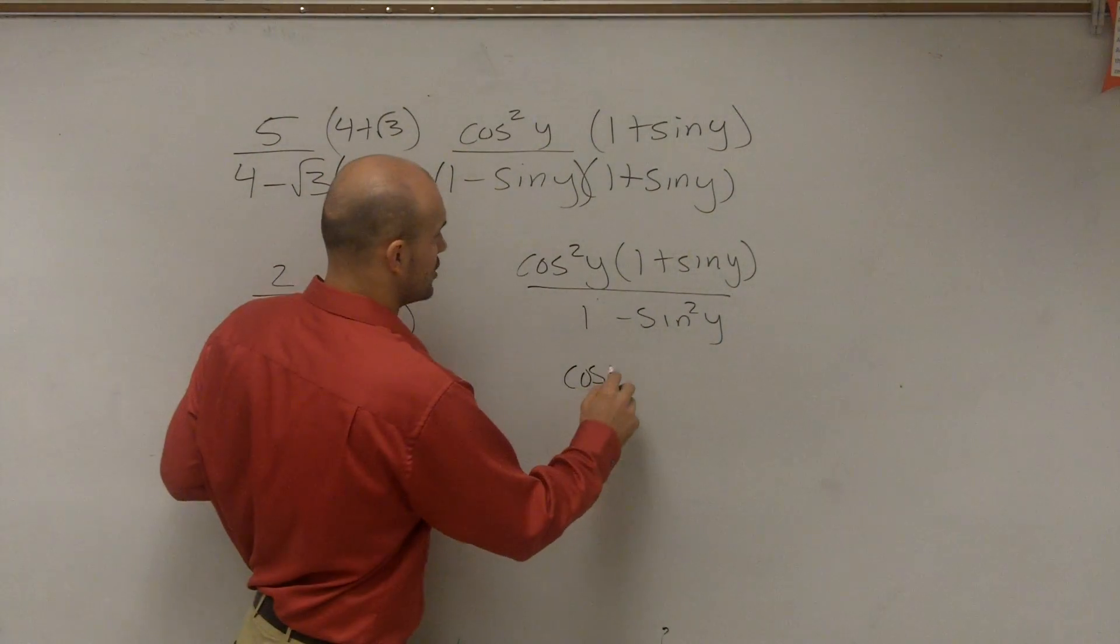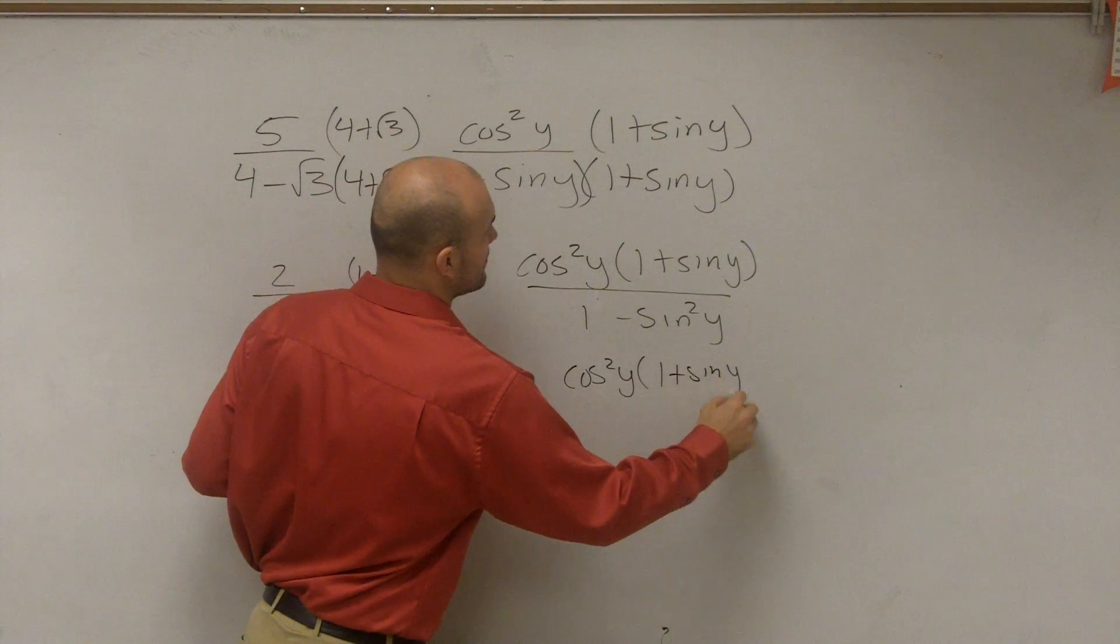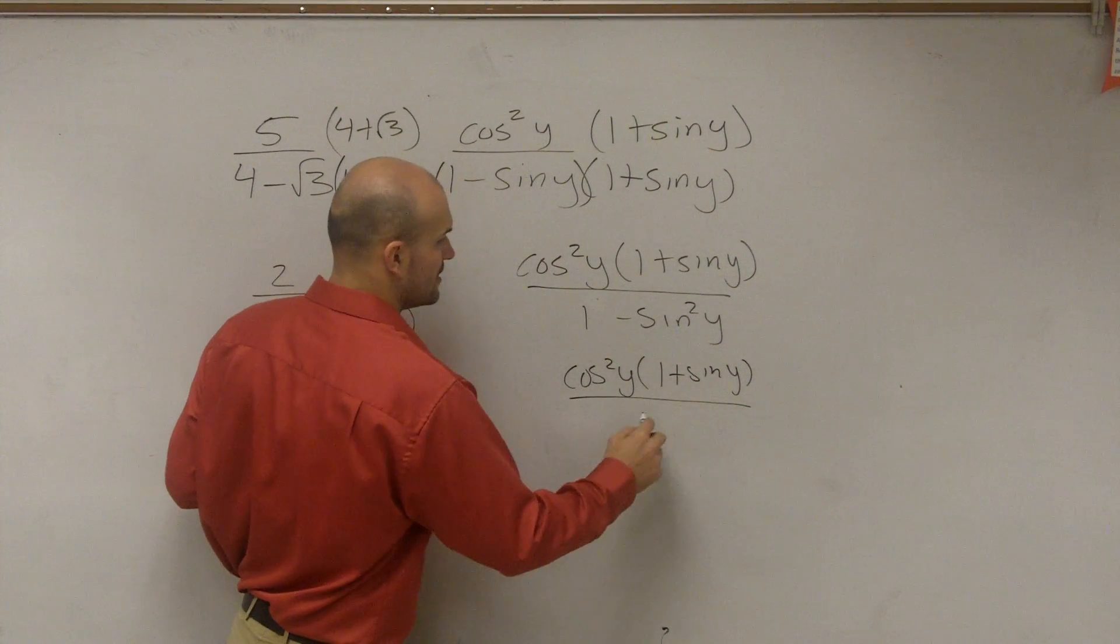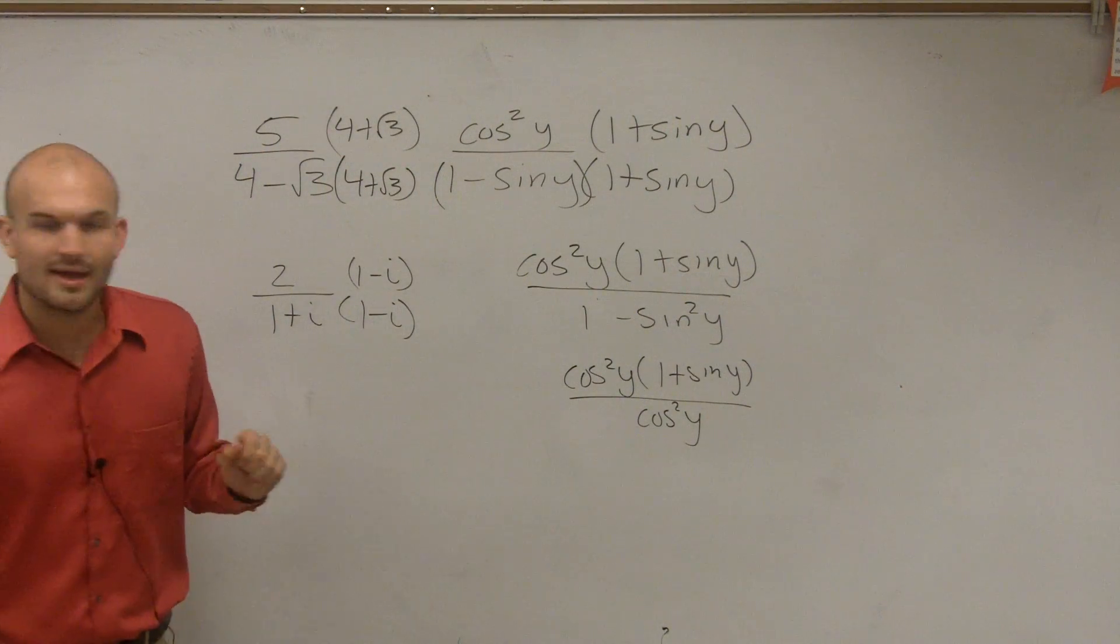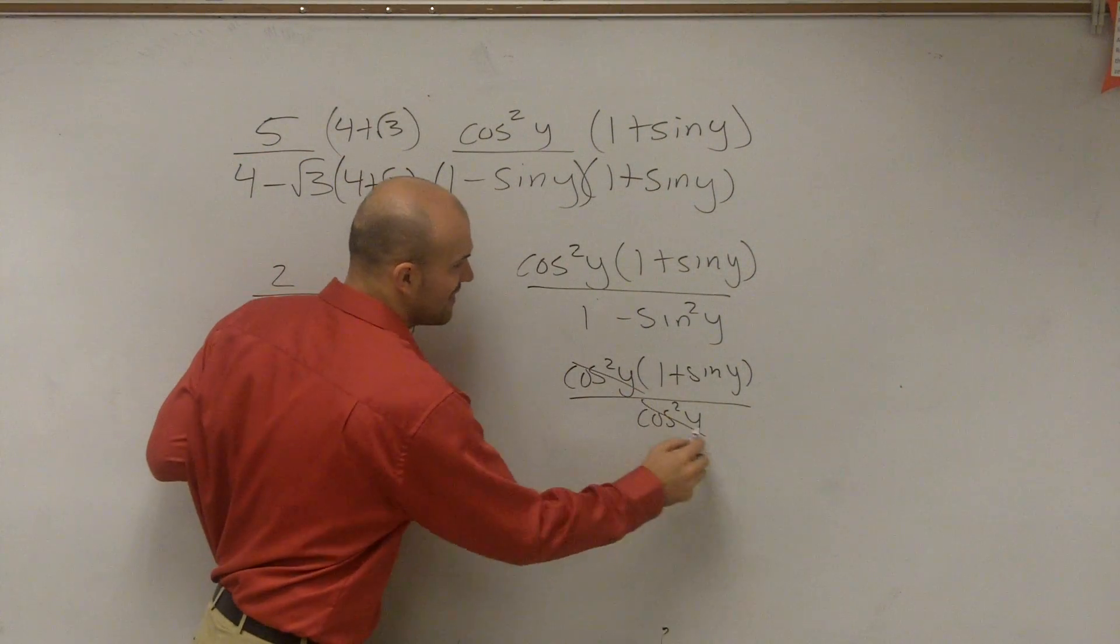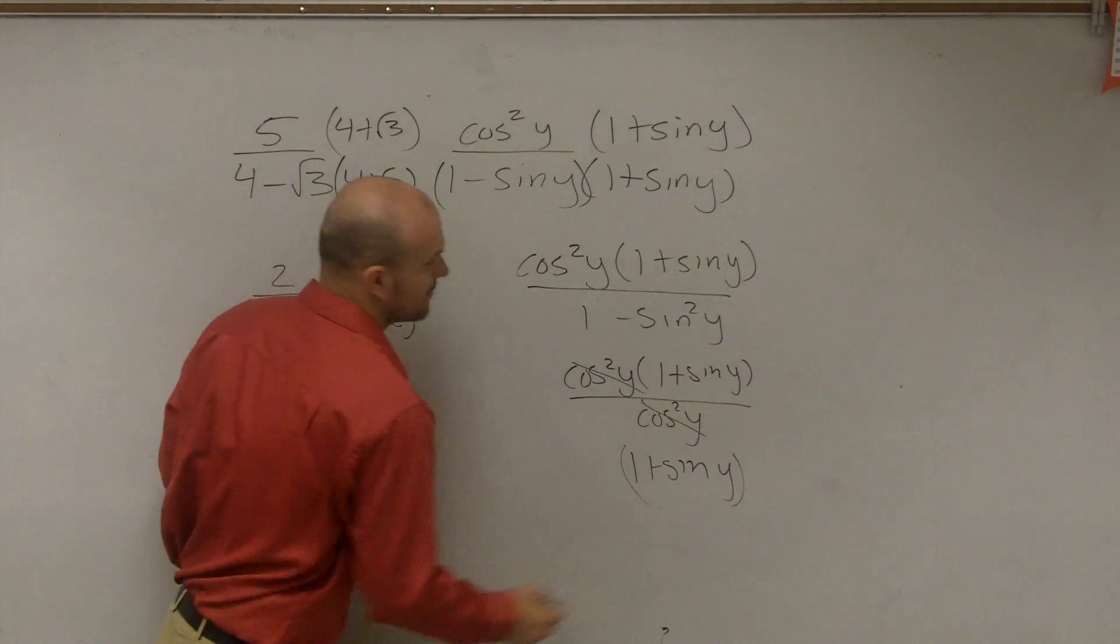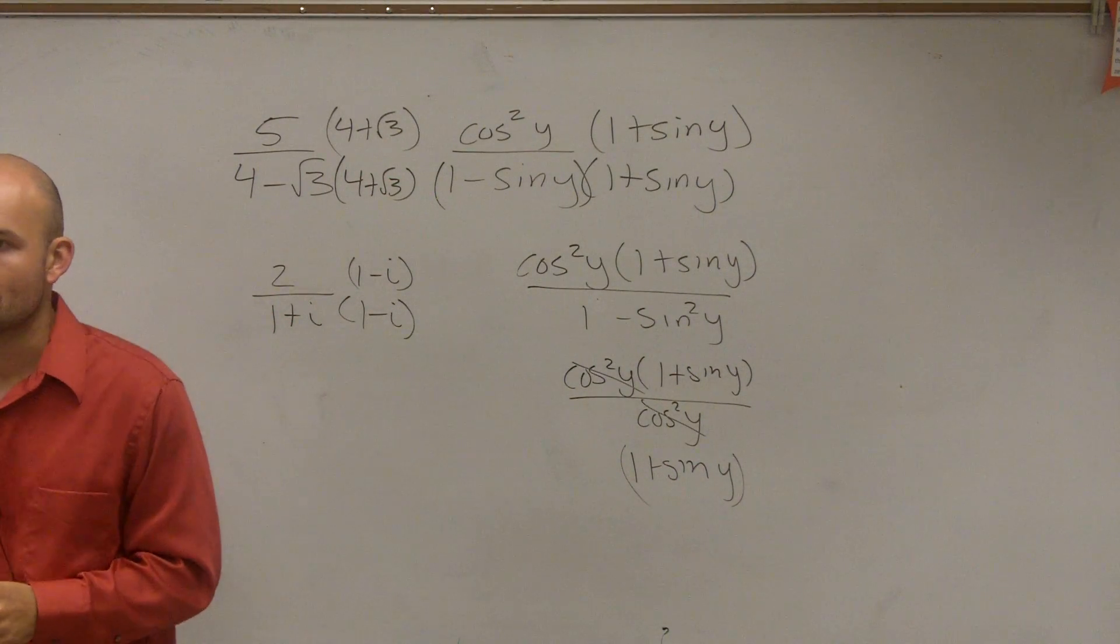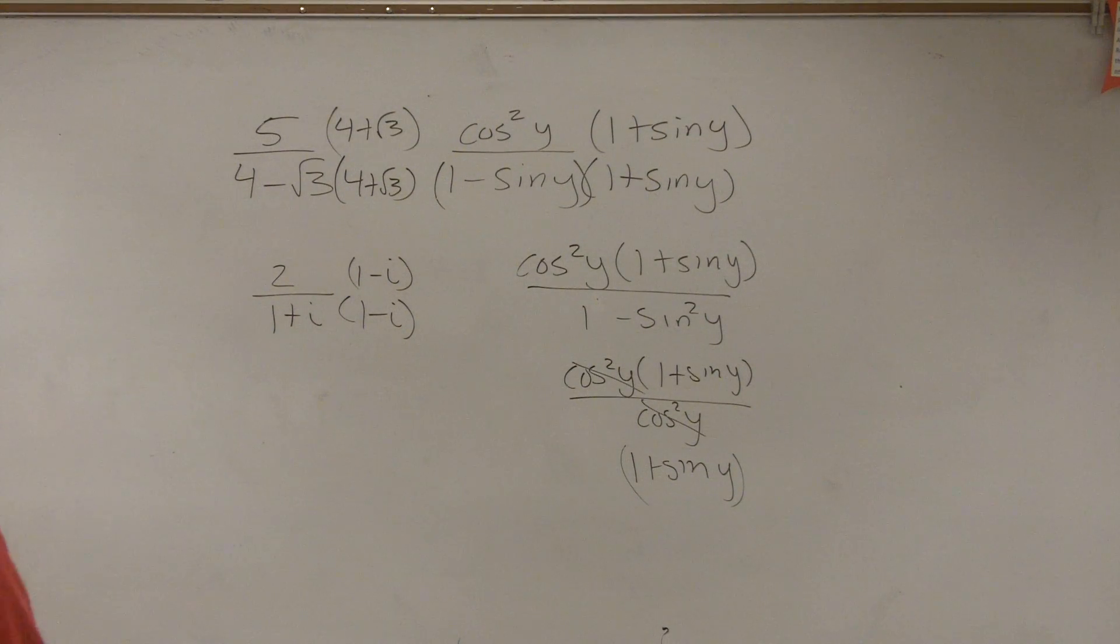So I have cosine squared of y times 1 plus sine of y divided by cosine squared of y. Hey, guess what? So those divide up to 1. My final answer is 1 plus sine of y. So if you got that right, give yourself an m.